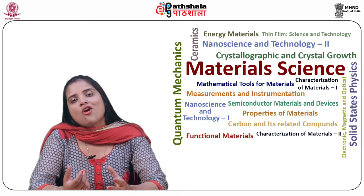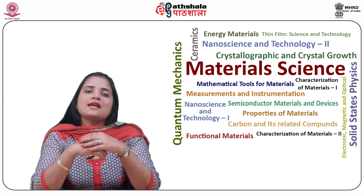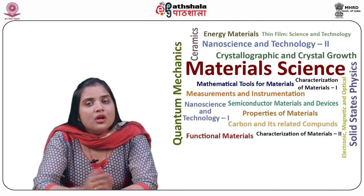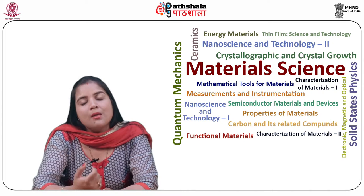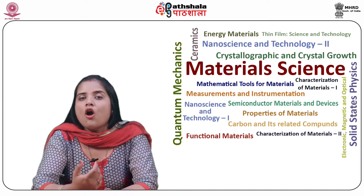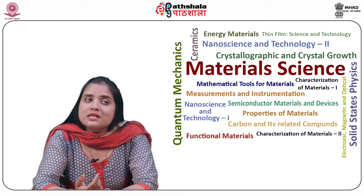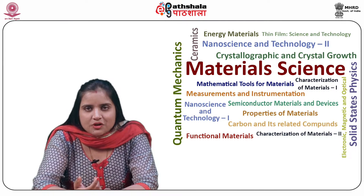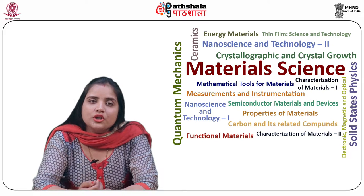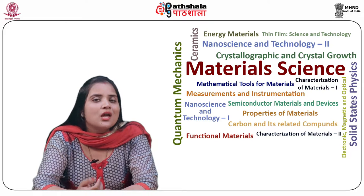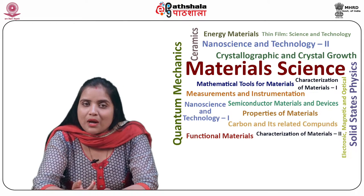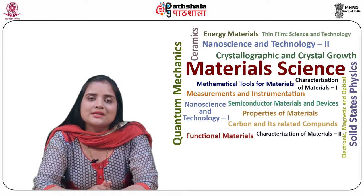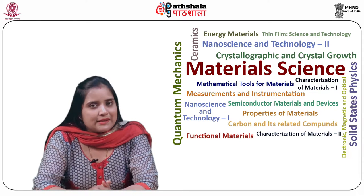Coming on to second generation cells. These include thin film solar cells made up of amorphous silicon, cadmium telluride, etc. These are commercially used in photovoltaic power plants, small standalone power systems, etc.